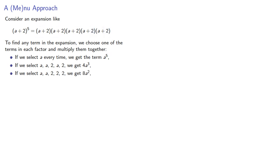If we select a, 2, 2, a, a, we get 4a³ again. So every product will appear once for every time we can select its factors.